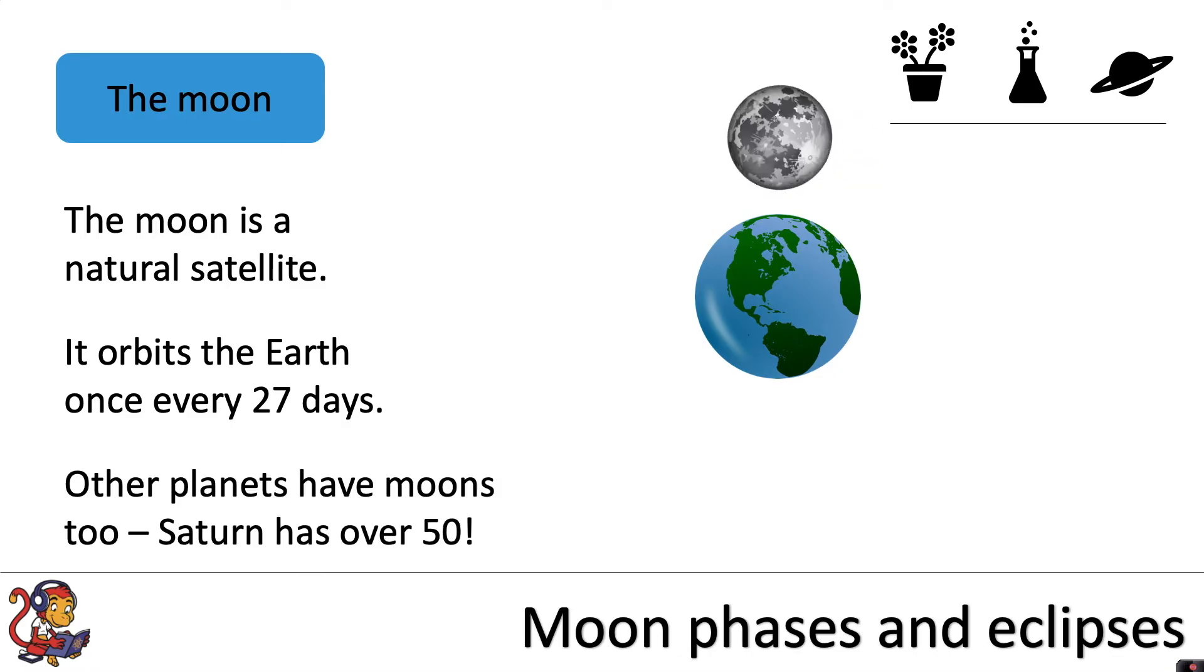Other planets have moons too. Saturn has over 50.